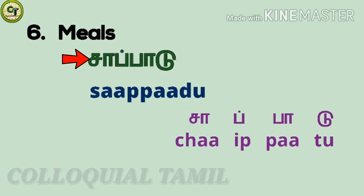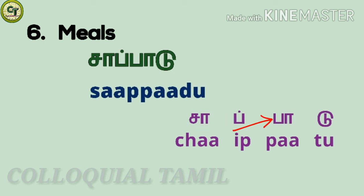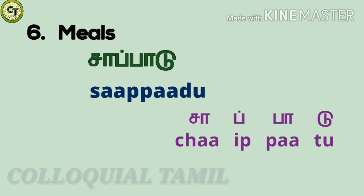For 'meals': saapadu. You can also use unavu instead of saapadu. Cha, a long zone letter — cha may also sound as sa in some words. Ip, a consonant. Pa, a long zone letter. To, a short zone letter — to may also sound as do in some words. Together: saapadu. You can also see the similarity between the verb 'eat', which is saapidu, and saapadu.